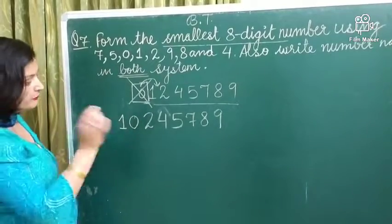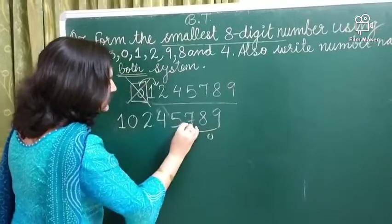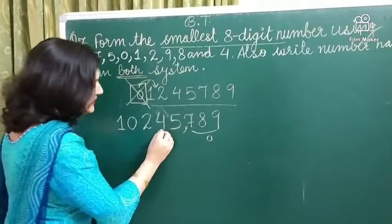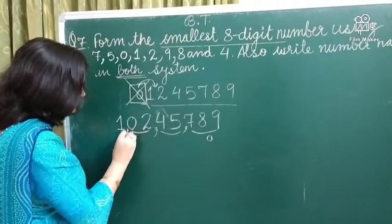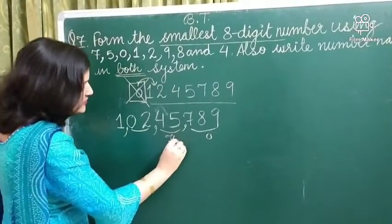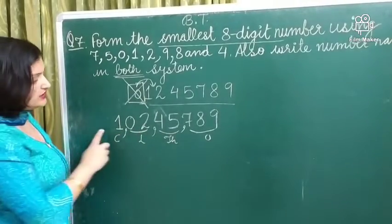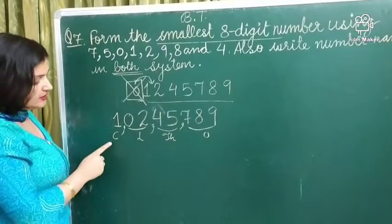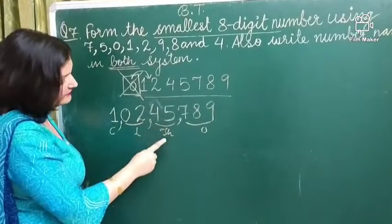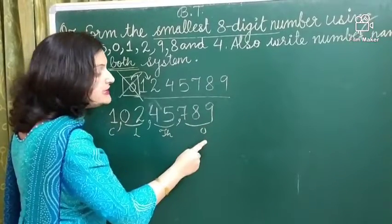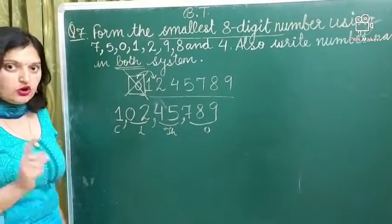Ab indian me hum kyaise likhte hai hai? We know that in Indian system, first place is once and once have three places. Then thousand having two places. Then lakhs, two places and last one. So once, thousand, lakh and crore. So the number name of this numeral is one crore, two lakh, forty five thousand, seven hundred eighty nine. Ab may ne ye number name bool diya hai. You have to write it yourself. Okay?